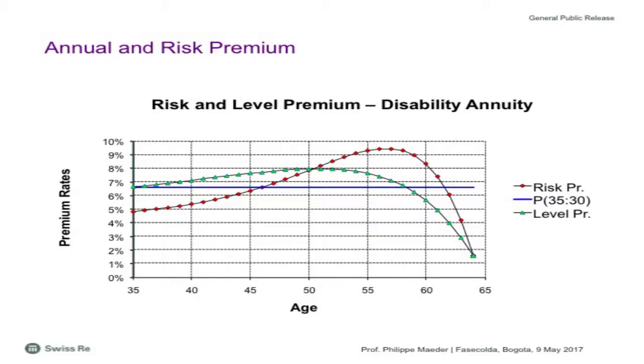Disability would come in the category of lab-supported products. The risk premium curve starts slightly below 5% at age 35 and increases to around age 56, then decreases. You can offer the product with level premiums — the fixed premium formula — where the policyholder always pays the same premium. This person initially pays more than the risk premium, accumulating an active-life reserve, then pays less and draws down that reserve.